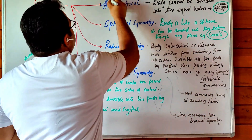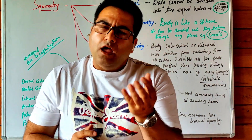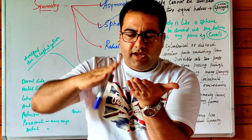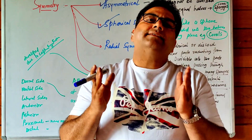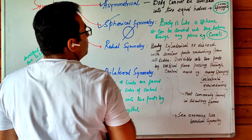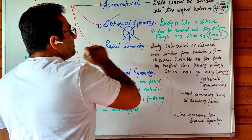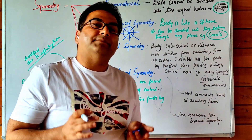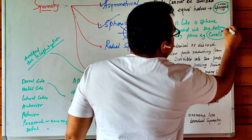Then we have spherical symmetry. Like a ball (sphere), the organism can be cut into two equal parts from any position — from the upper side, lower side, or sideways — and always yield two equal halves. This spherical symmetry is seen in corals, which are spherical in shape.